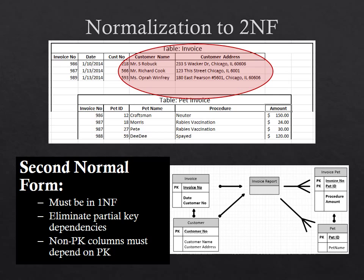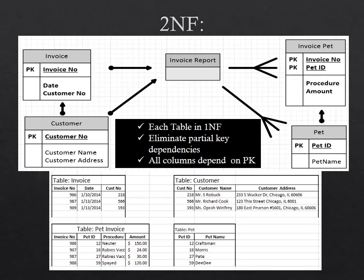Notice that the invoice table has a customer name and address, and this is not really dependent on the primary key or invoice number. It is really dependent on a non-primary key column — the customer ID. The second normal form requires that this data be broken out into a separate customer table. So here are our database tables in second normal form. By creating a separate pet table we dealt with the partial dependency found in the composite primary key. By creating a customer table we removed the partial dependencies where customer name and address were dependent upon a customer ID and not the primary invoice key.